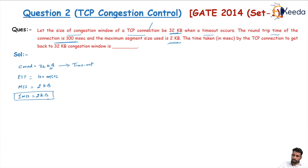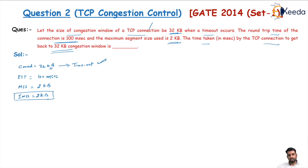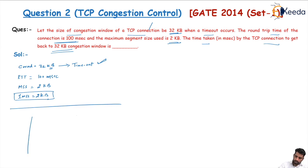The question asks: after a timeout occurs and we restart transmission, how much time will it take to reach again up to the same congestion window size of 32 KB? There is a sender and receiver here, and the current congestion window size is 32 kilobytes.